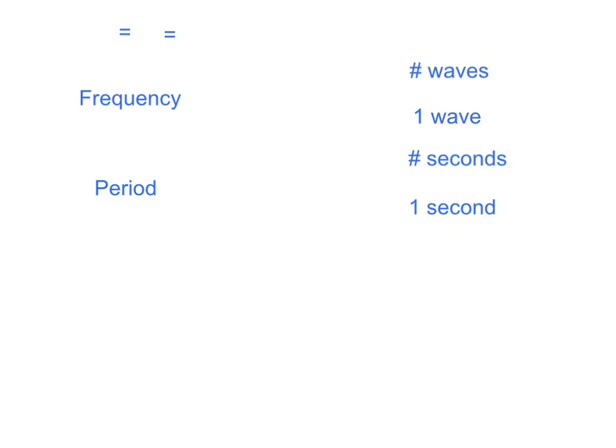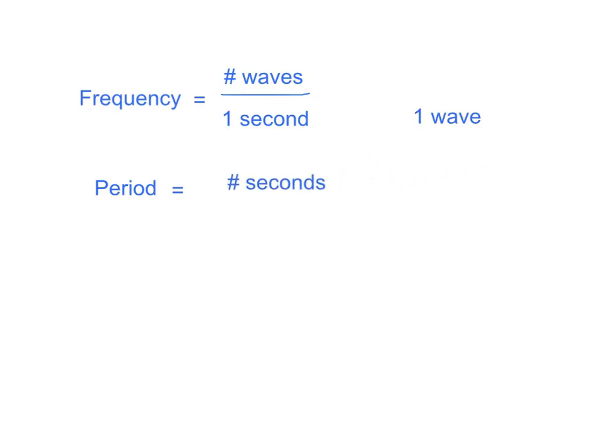Once we've defined things about a wave, such as its frequency or its period or its wavelength, there are some useful calculations that we can do about waves. So let's review real fast here. First of all, the frequency of a wave is the number of waves that goes by per second in one second. The period of a wave, on the other hand, is how many seconds it takes for just one wave to go by.